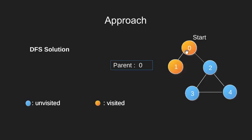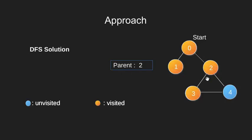Now for node 1, the only neighboring node is 0, which is visited and also the parent of 1, so we backtrack to vertex 0. From 0, the unvisited neighbor is 2. We visit 2 and since we are coming from vertex 0, parent remains 0. Now from 2, we have 3 neighbors: 0, which is visited but is the parent of 2, and 3 and 4 which are unvisited. We move to vertex 3, visit this node, and update our parent variable to 2. From 3, we have 2 and 4 as neighbors. 2 is visited but is the parent of 3, so we move to the unvisited neighbor 4.